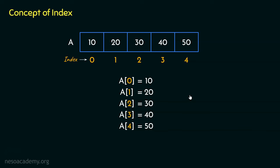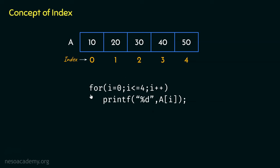Let me now show you a program code in the C programming language to access the different elements of this array. Consider this code segment — we have a for loop. We are initializing the variable i, which is meant for the index, to the value 0. The first cell of the array has index 0. The condition is that i should be less than or equal to 4, because we want this code to run for all 5 cells of array A. In the final part of the for loop, we perform i++, that is, we increment the value of i one at a time.